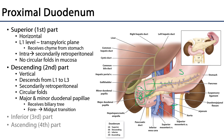The major duodenal papilla is quite a landmark in that it divides the foregut from the midgut. The minor duodenal papilla is typically found proximal to the major duodenal papilla, and if present, it drains the accessory pancreatic duct, which drains the head of the pancreas.